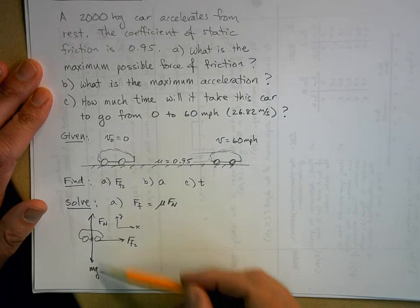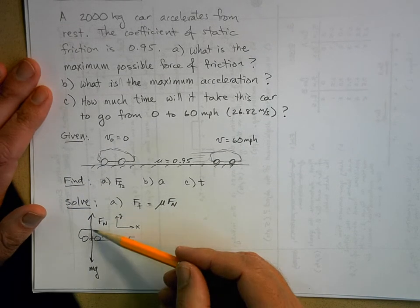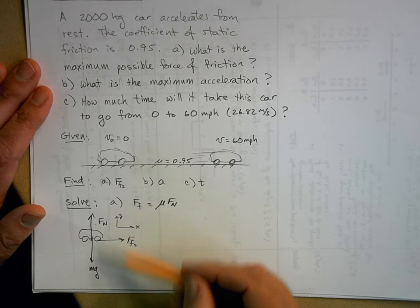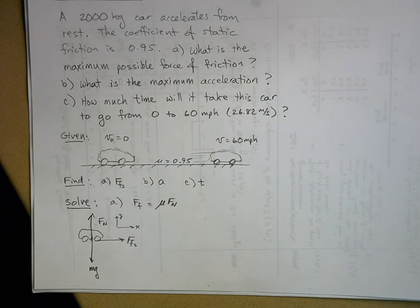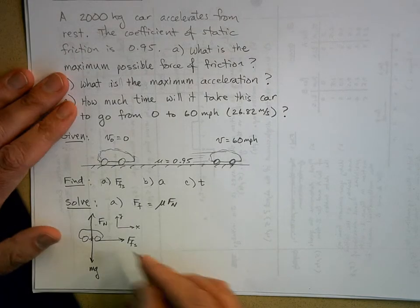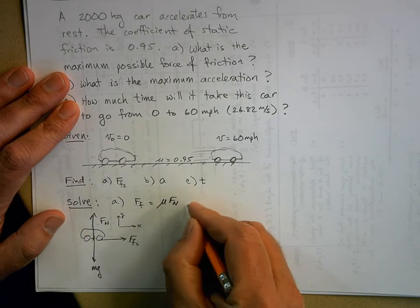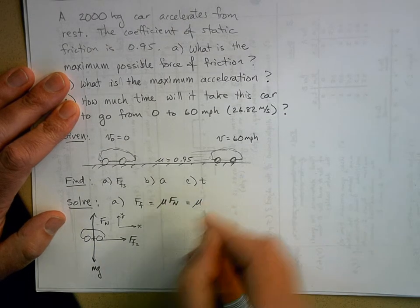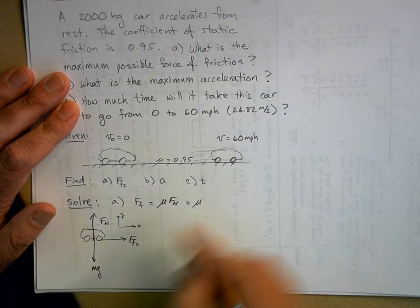So we'll call this the x direction and this the y direction. Now if we sum the forces in the y direction, we can see that the normal force is just supporting the weight here. And at this point we've done this so long now, I'm just going to say that's good enough. The normal force, in this case, is just equal to the weight.